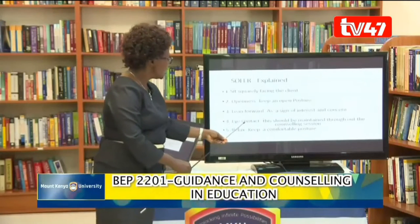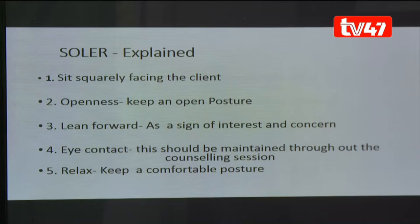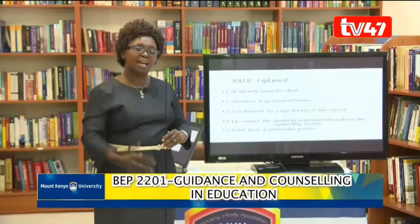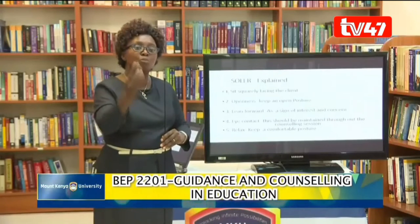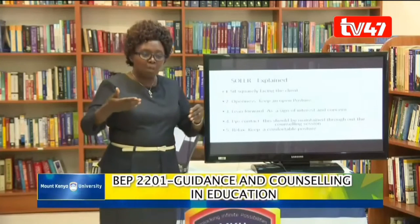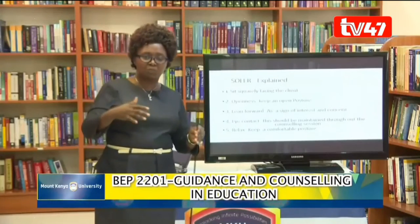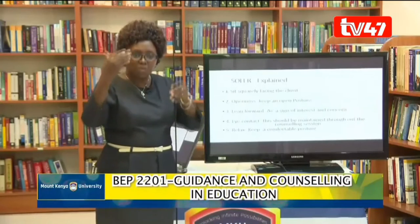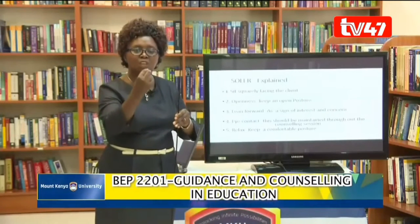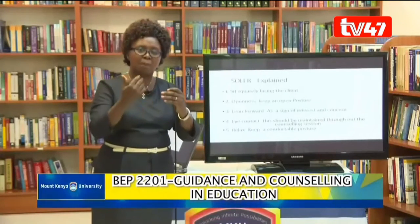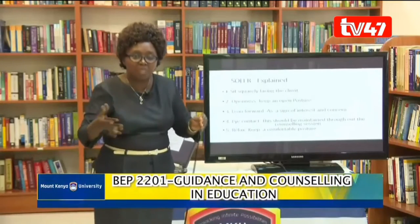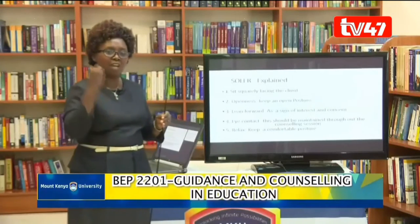Number four is E — you maintain eye contact throughout the counseling session. Don't avoid looking at the client because when you look outside you become distracted. Maintaining eye contact allows you to see everything your client is displaying. Maybe the client is not crying but is tearing — if you are not observant enough, it will be very difficult to know what the issue is. You also observe if the client is fidgeting, raising their tone, or lowering their tone. Those are keys in counseling to gather information.